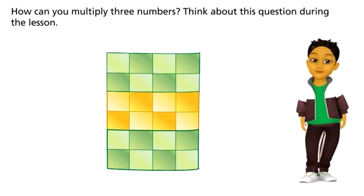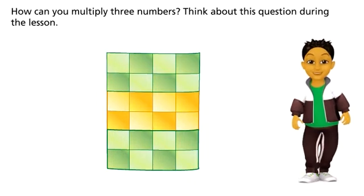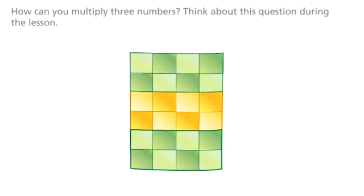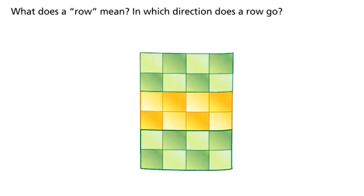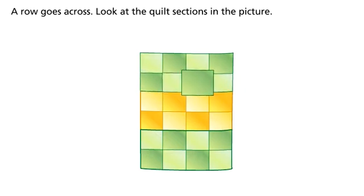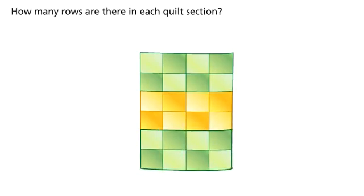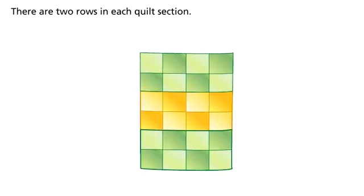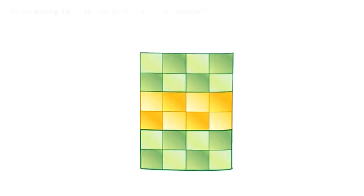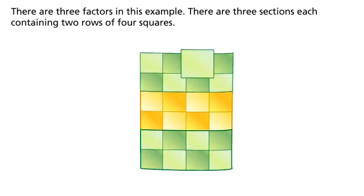How can you multiply three numbers? Think about this question during the lesson. What does a row mean, and in which direction does a row go? A row goes across. Look at the quilt sections in the picture. How many rows are there in each quilt section? There are two rows in each quilt section. How many factors are in this quilt example? There are three factors — three sections, each containing two rows of four squares.